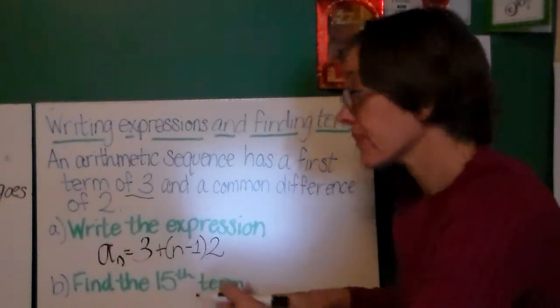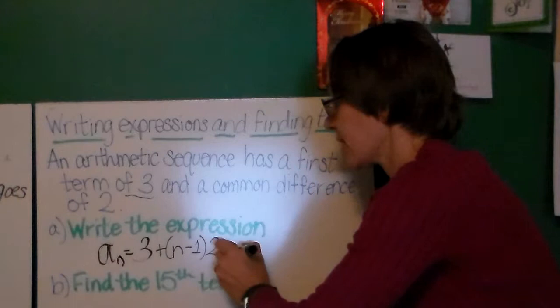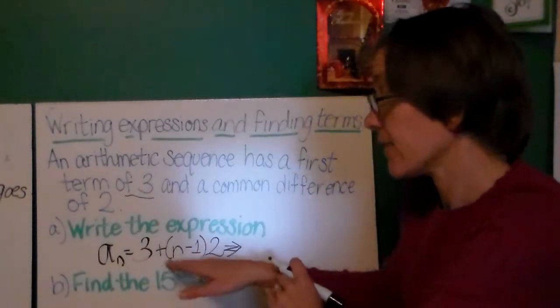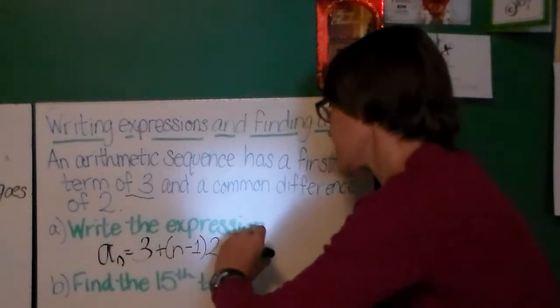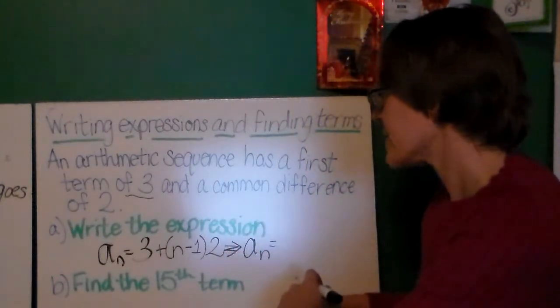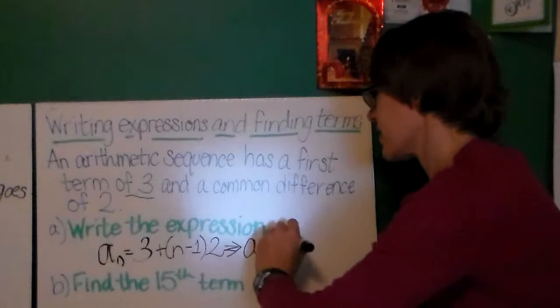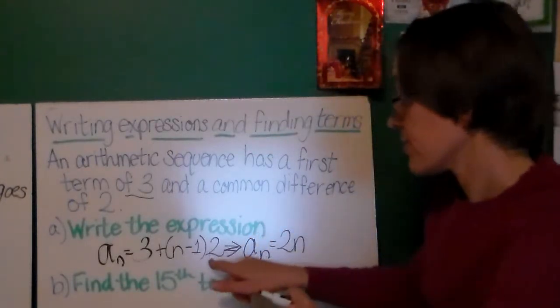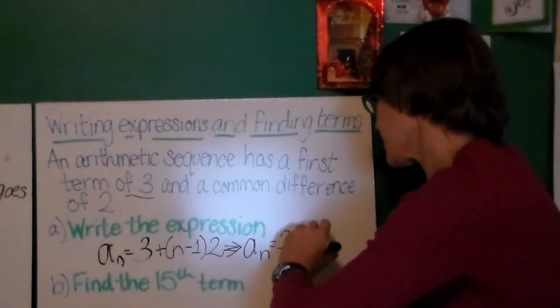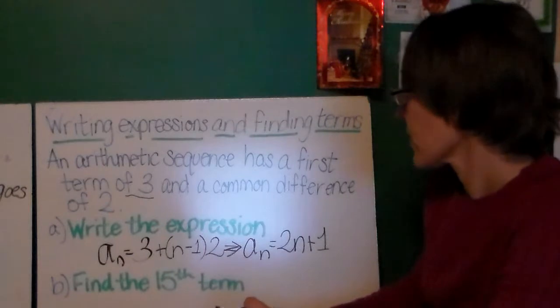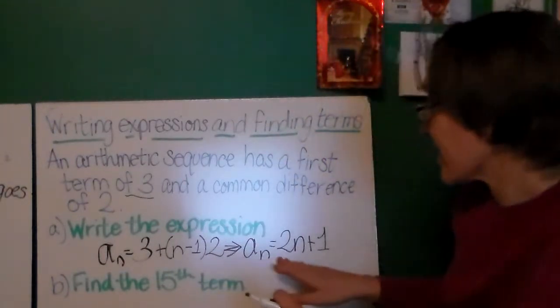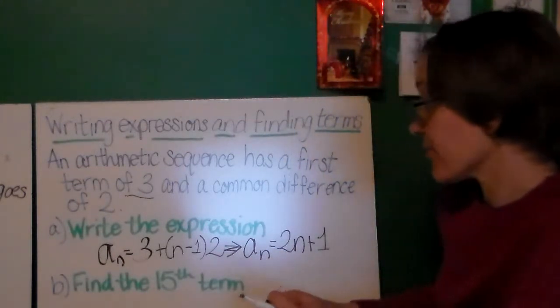Now, what I could do here is change this around a little bit and apply the distributive property. 2 times negative 1 is negative 2. 2 times n is 2n. So, another way of writing this that you will often see is a sub n equals 2 times n is 2n. 2 times negative 1 is negative 1, so if you add that to 3, you get plus 1. This will still give us our first term of 3, and because 2 is acting like a slope, it's going to have a common difference of 2.